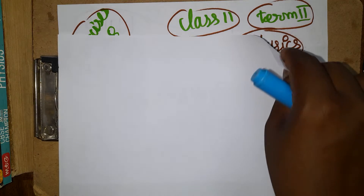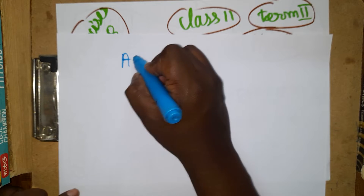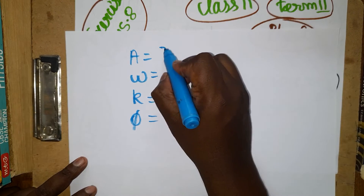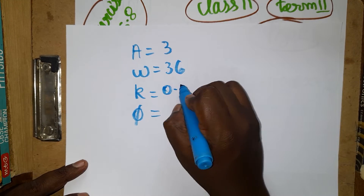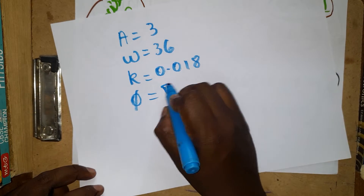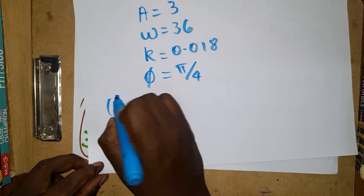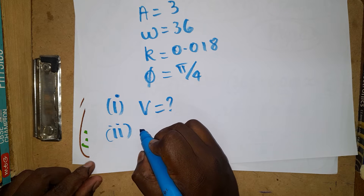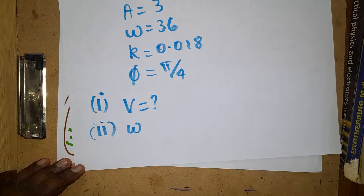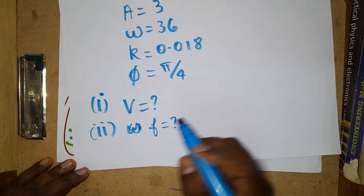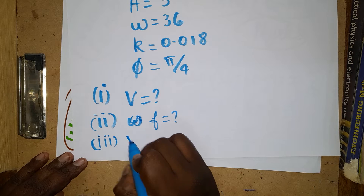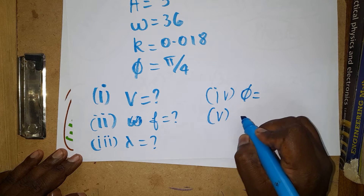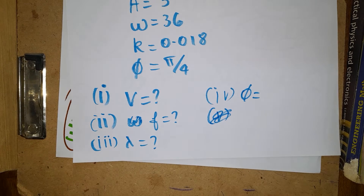Now let's see what data is given and what is asked. From the equation, the primary data is: amplitude A = 3, ω = 36, k = 0.018, and φ = π/4. The questions asked are: first, velocity; second, frequency; third, wavelength; and fourth, phase difference.